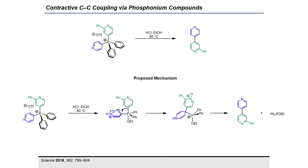A recent report shows that phosphoniums undergo reaction with alcohols in the presence of HCl, triggering a contractive C-C coupling reaction. In the proposed mechanism, the phosphonium reacts with ethanol and HCl to form a pentacoordinate intermediate. Subsequent migration of the apical aryl substituent to the equatorial aryl group to form a C-C bond, followed by elimination, results in the formation of the heterobiaryl product.